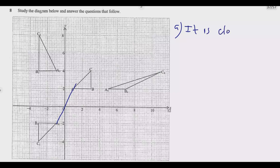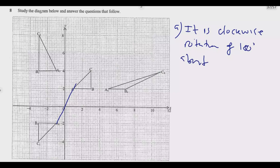Whether clockwise or anticlockwise, for 180 degrees it will still be the same. So the answer is: a clockwise rotation of 180 degrees about the origin, which is (0, 0). That's it — once you do that, you're good to go. Then you can move to question B.